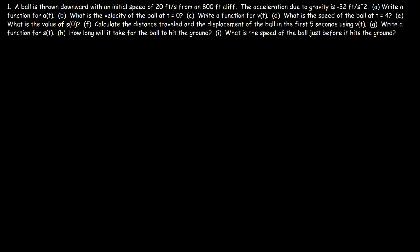Consider this problem. A ball is thrown downward with an initial speed of 20 feet per second from an 800-foot cliff, and we're given the acceleration due to gravity. Write a function for a of t, the acceleration with respect to time. The acceleration due to gravity is a fixed number, so a of t is simply equal to negative 32. It doesn't depend on time — it's always the same.